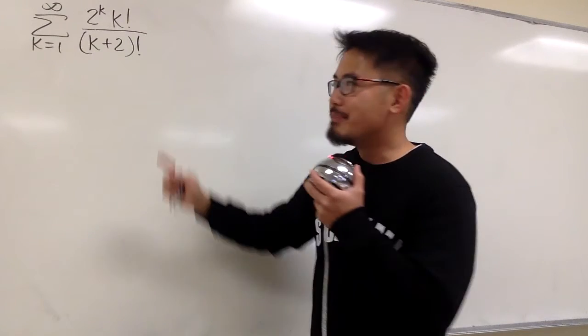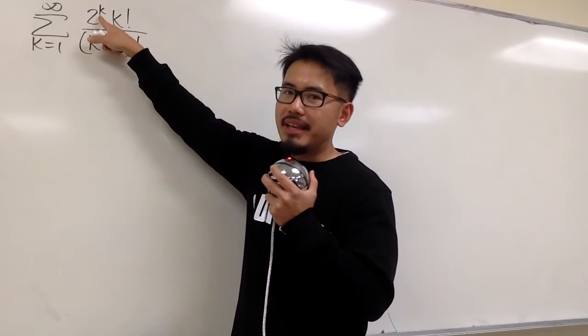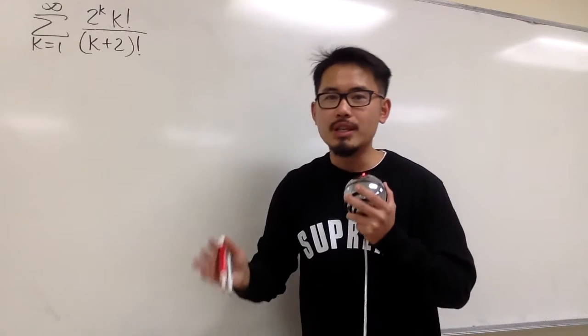The usual way to go about this is that because we have the factorials and we also have the k in the exponent, we should do this with the ratio test.